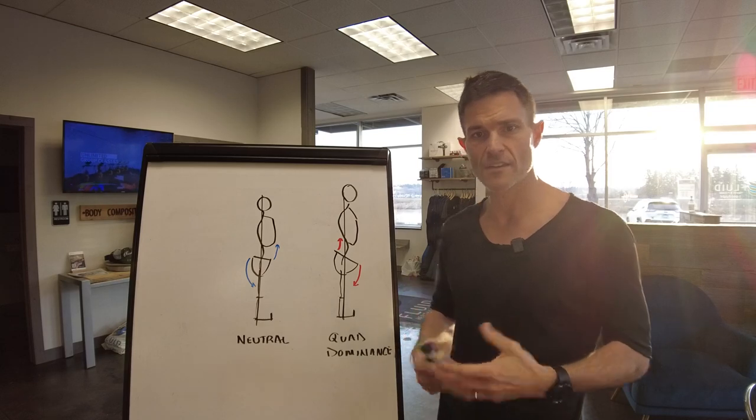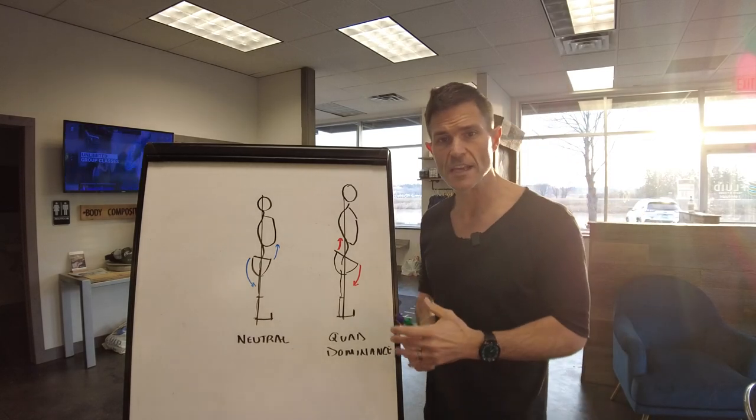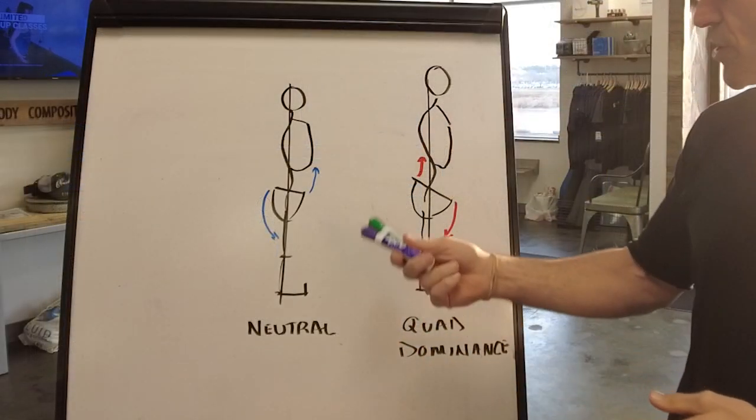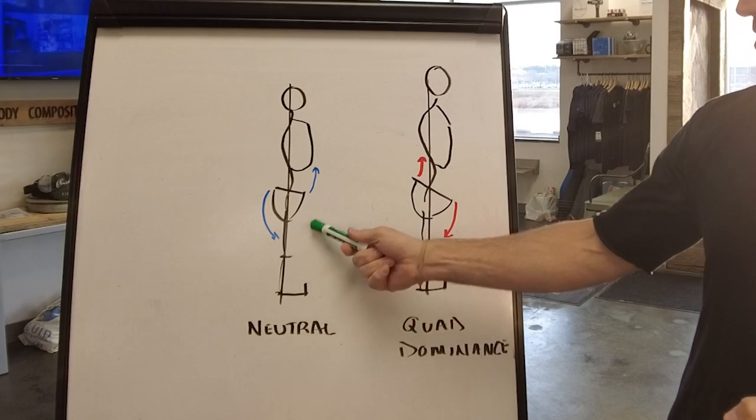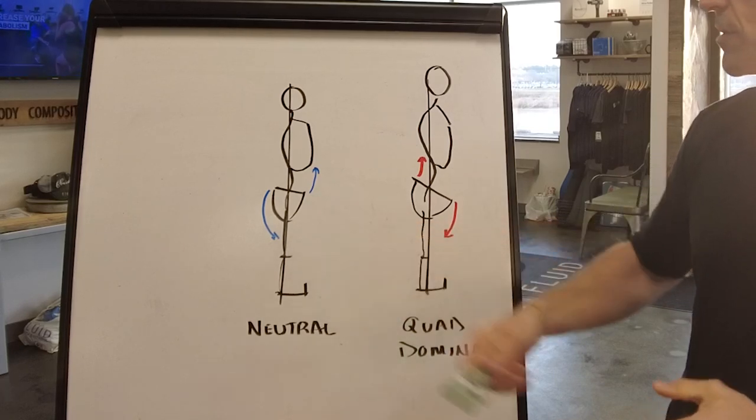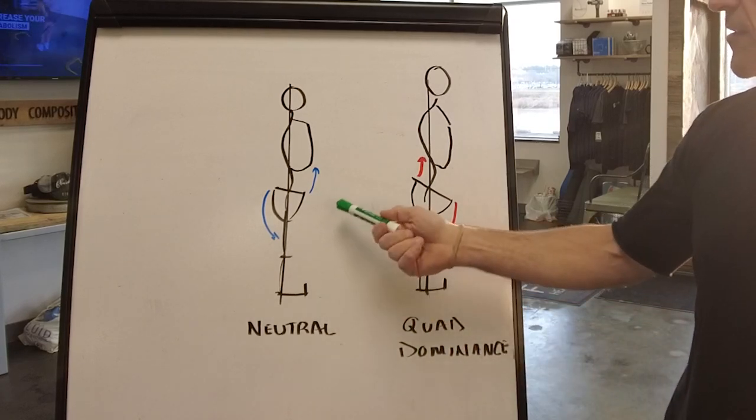So what I want to show you is what happens here. This is a neutral posture from a side profile, showing the right side of the body. We have this drawn line down the body and you're going to see that these segments intersect on this neutral line.